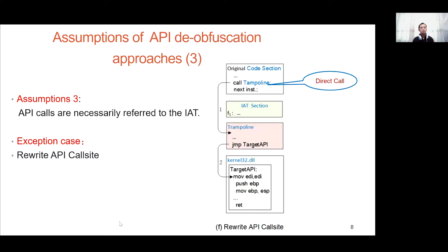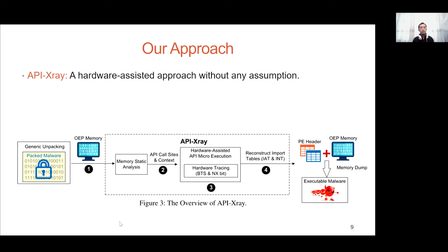Our approach is called API X-ray, as shown in this figure. First, the input is the OEP memory captured by an unpacking tool. Second, the static analysis module searches all possible API call sites in the OEP memory. Third, the API macro-execution module enforces execution at each API call site to identify the target API. Fourth, the target APIs are used to reconstruct an executable malware. The key module of our approach is hardware-assisted API micro-execution, which we will introduce next.